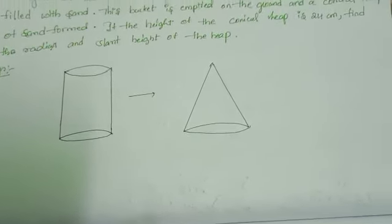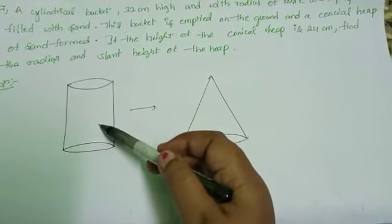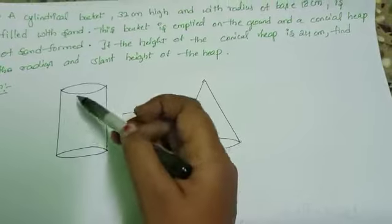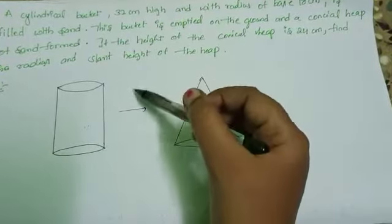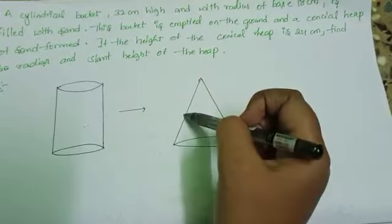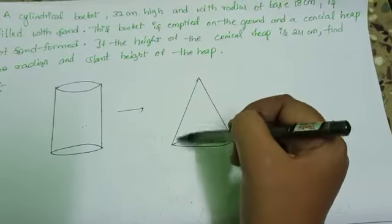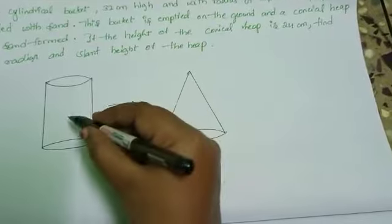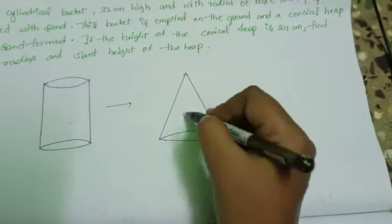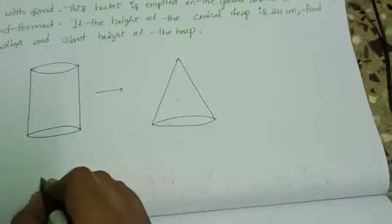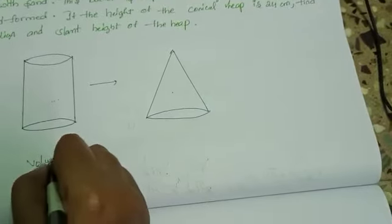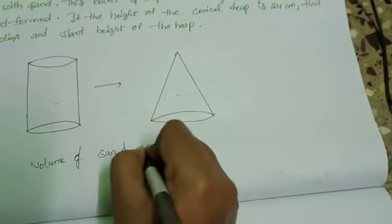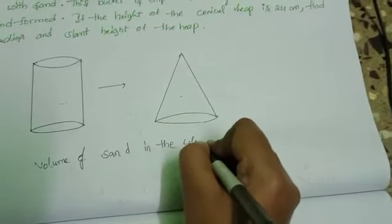Volume of the sand equal to volume of the cylinder. First sand in the cylindrical bucket after emptied on the ground, it forms a conical heap. So volume of the cylinder equal to volume of the conical heap.